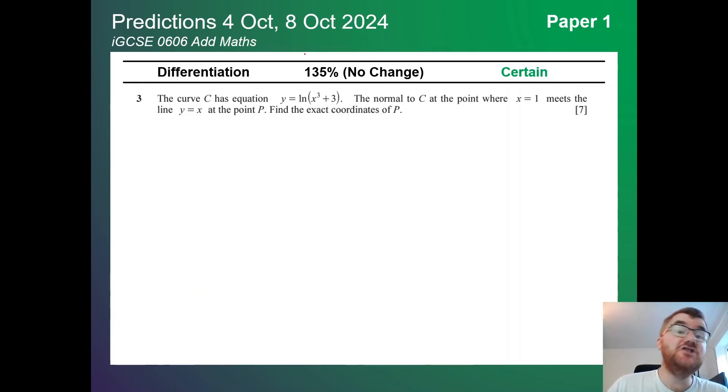On to differentiation. No surprise whatsoever here. It's 135%, just like in the May exams. These questions can vary quite a lot. Notice they've sneaked a little bit of logs in here as well for good measure. Anytime you get a word normal in these questions you know you have to differentiate.